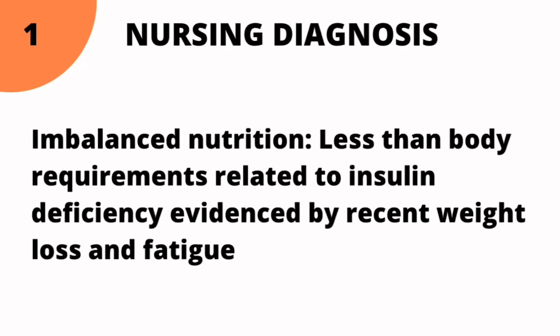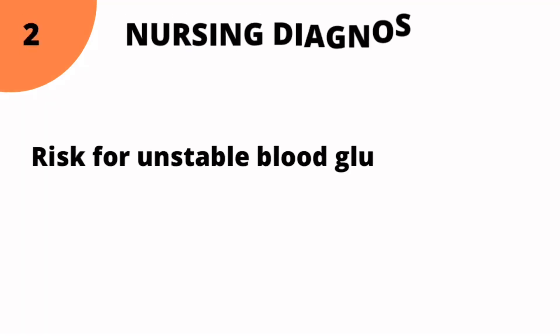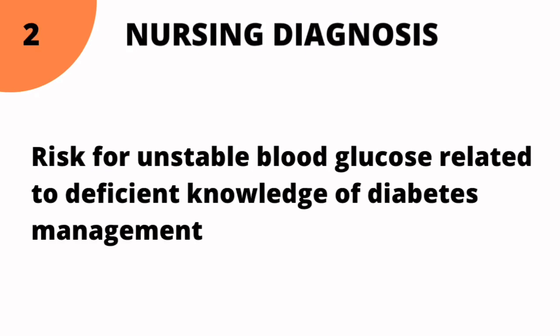Today we are going to work on one actual diagnosis and one risk diagnosis related to diabetes mellitus. The first nursing diagnosis is imbalanced nutrition less than body requirements, related to insulin deficiency, evidenced by recent weight loss and fatigue. This is an actual diagnosis: the problem statement is imbalanced nutrition less than body requirements, the etiology is insulin deficiency, and the supporting data is recent weight loss and fatigue.